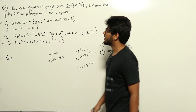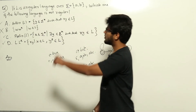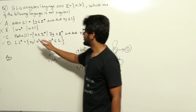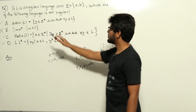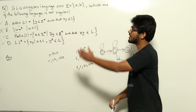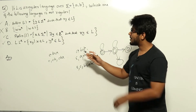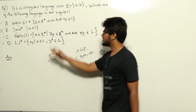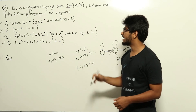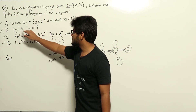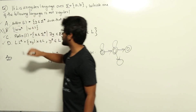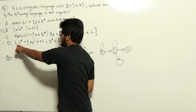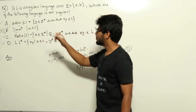That leaves option B as the only non-regular language. Option B is the set of strings w such that w·w-reverse belongs to L. This is not regular because to verify membership we need to check up to the midpoint of the string and then verify the reverse order, which requires an infinite amount of memory and a stack. This is actually a context-free language, not a regular language. Note that 'w·w-reverse ∈ L' and 'L concatenated with L-reverse' are different languages. Option B is the correct answer.